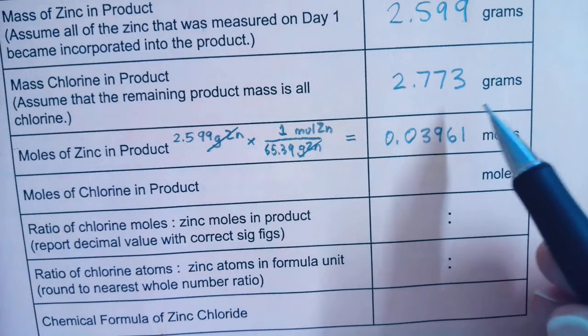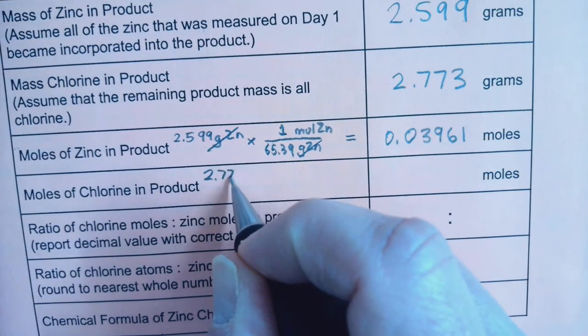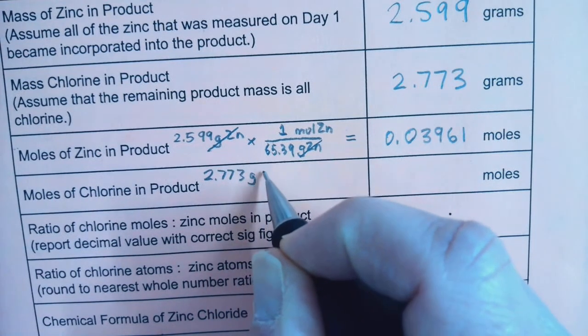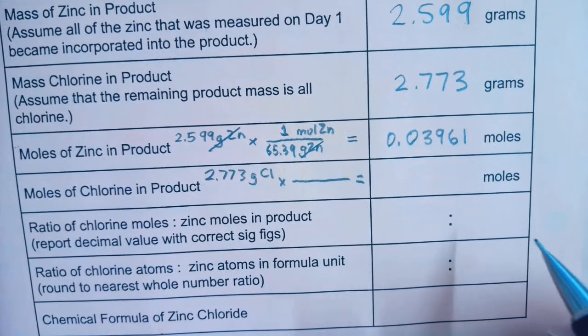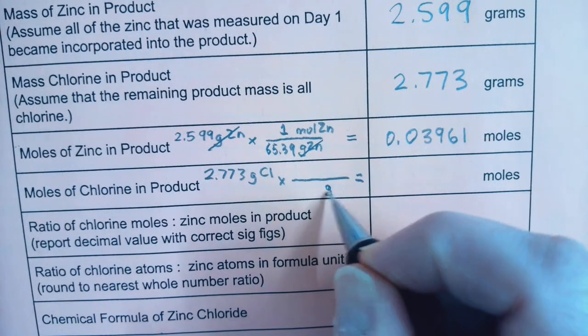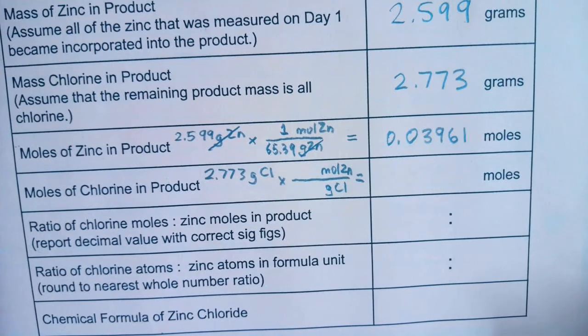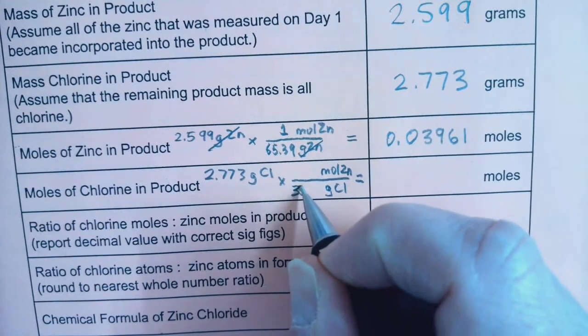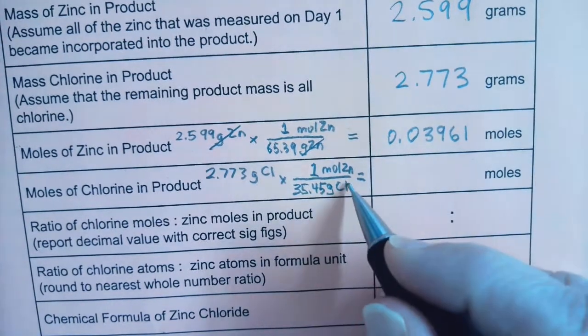Similar calculation for chlorine. I assumed that I had 2.773 grams of chlorine. There will be a different conversion factor for chlorine because an atom of chlorine has a different mass than an atom of zinc. And a mole of chlorine has a different mass than a mole of zinc. Again, I want grams of chlorine to cancel. I want to end up in moles, my counting unit. Chlorine is atomic number 17. The molar mass is 35.45 grams in one mole.